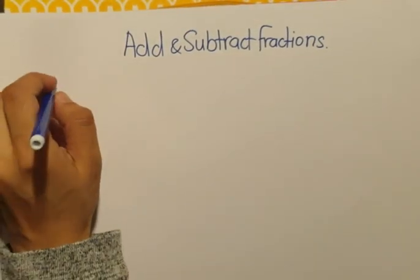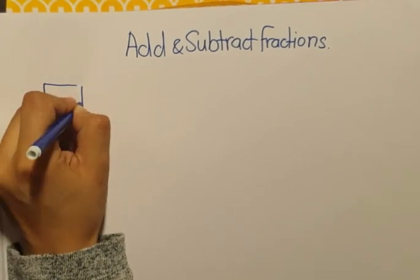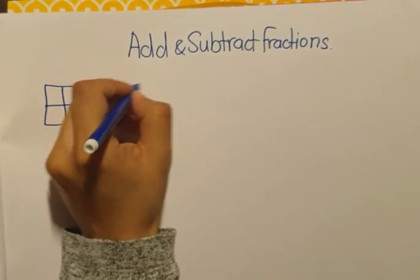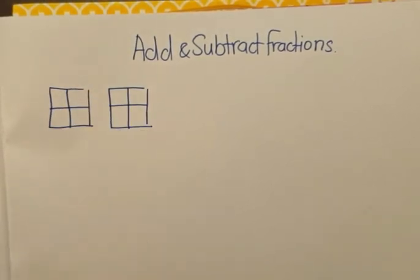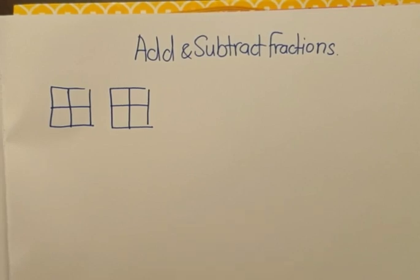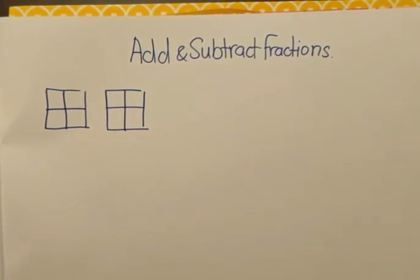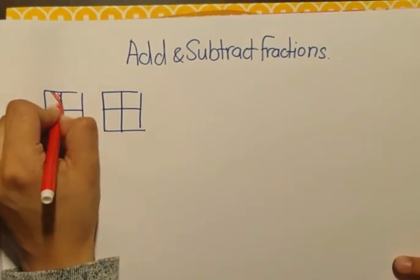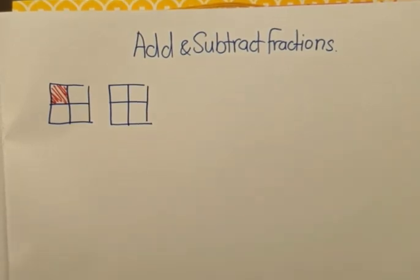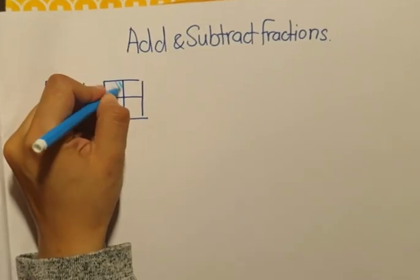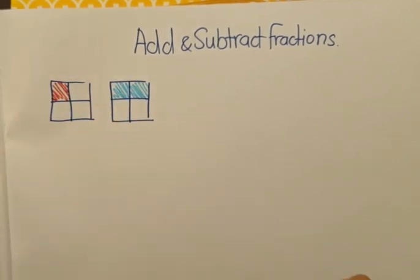Now let's say for example I have two squares. Here's one and here's two. And in one of them I have one part shaded and in the other one I have two parts shaded.